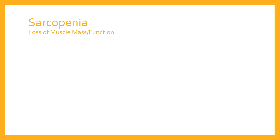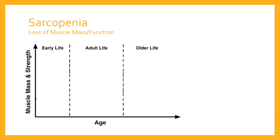We're going to talk about how sarcopenia occurs as we get older and look at the responses we can make to that loss of muscle mass and function. Here's a graph. We're going to roughly split our life stages into three. Across the x-axis at the bottom we've got age, and I've not been particularly specific about the ages here as we pass from early life into adult life into older life, because it's somewhat different for all of us. These are just general ideas as we progress through the life stages.